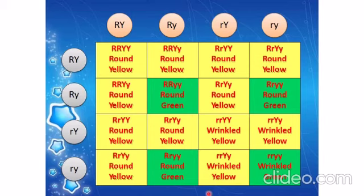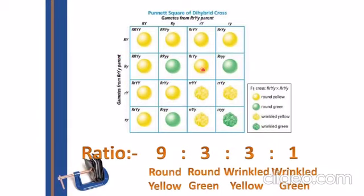There are two types of ratios — one is phenotypic and one is genotypic. Phenotypic is how the plants look. After the F2 generation, the phenotypic ratio is 9:3:3:1. Genotypic ratio is based on how the gametes are set up. So the final result: round and yellow is 9, round and green is 3, wrinkled and yellow is 3, and wrinkled and green is 1 — giving the 9:3:3:1 ratio.